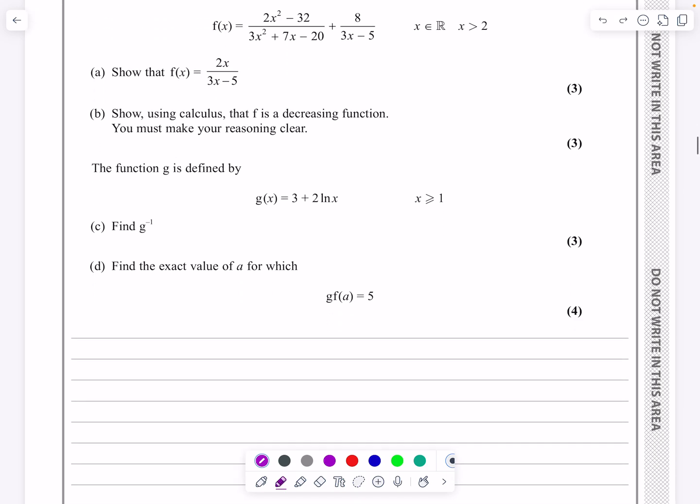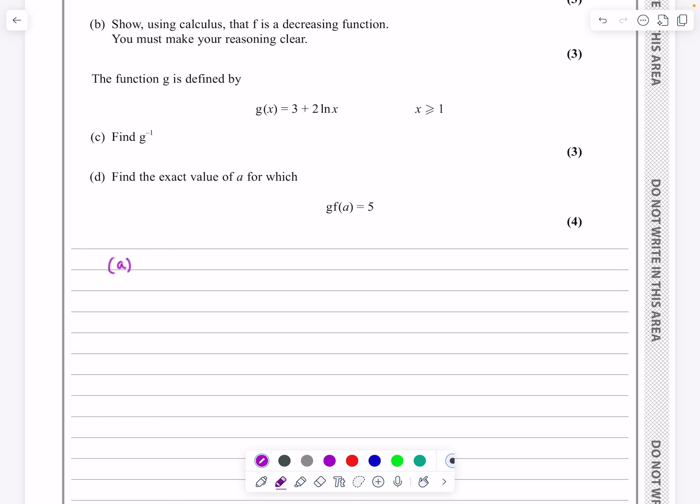Yeah, absolutely, we can give it a go. So part a, fx is given by 2x squared minus 32, all divided by 3x squared plus 7x minus 20, and then plus 8 over 3x minus 5. So when I'm looking at this fraction here, we've got to use a little bit of our common sense and a little bit of previous experience here.